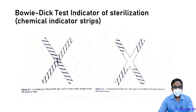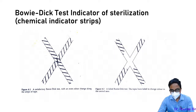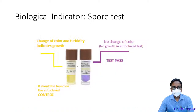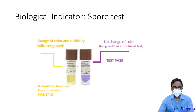With Bowie-Dick tape strips, if all the markings have appeared, that means the temperature has reached the required level — a satisfactory test. If markings are missing, the method has failed. The Brownie's tube indicator shows various colorizations according to which we assess whether the sterilization process is satisfactory. These chemical and heat indicators tell us about the conditions, not whether autoclaving was actually effective. The biological spore test is the indicator for the whole process.